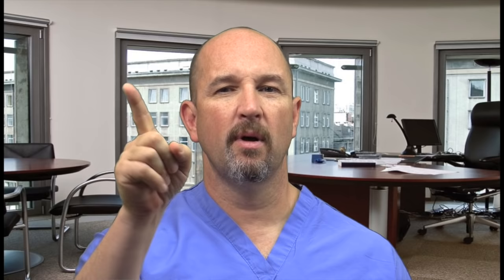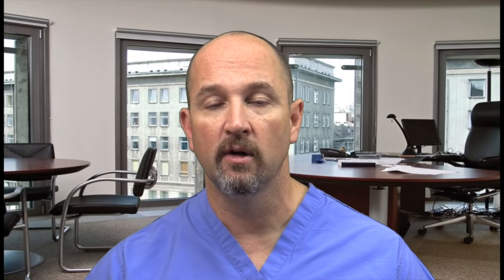Plummer-Vinson syndrome: the plumber named Vincent has spoon nails (koilonychia), esophageal webs, glossitis, and dysphagia. There are five fingernail findings for your boards: koilonychia, splinter hemorrhages, onychomycosis (fungal), psoriasis (pitting), and clubbing (stands for long-standing pulmonary disease).